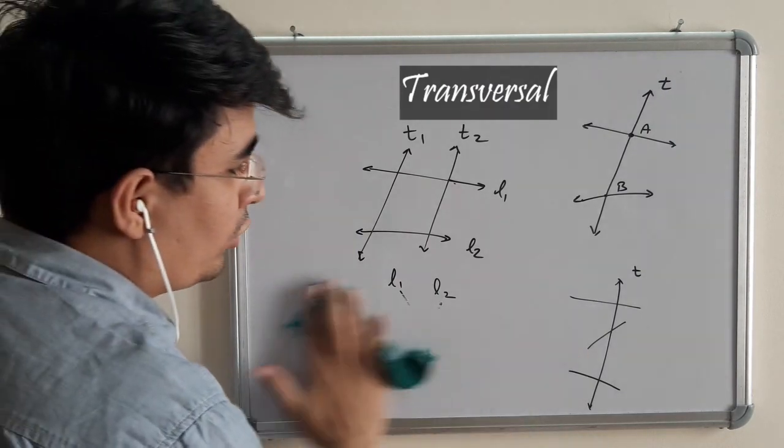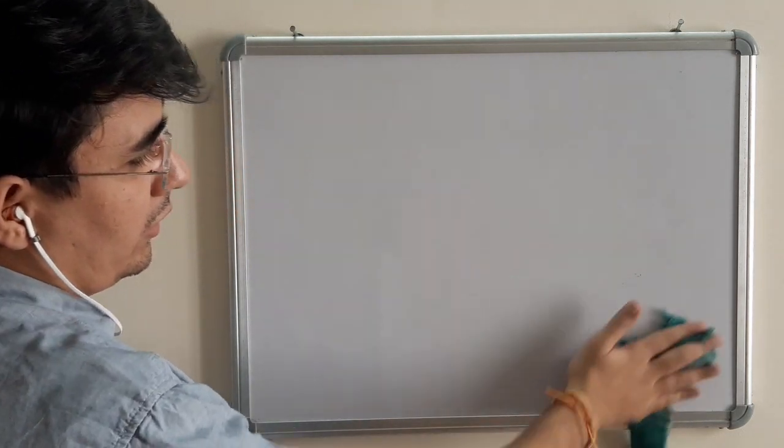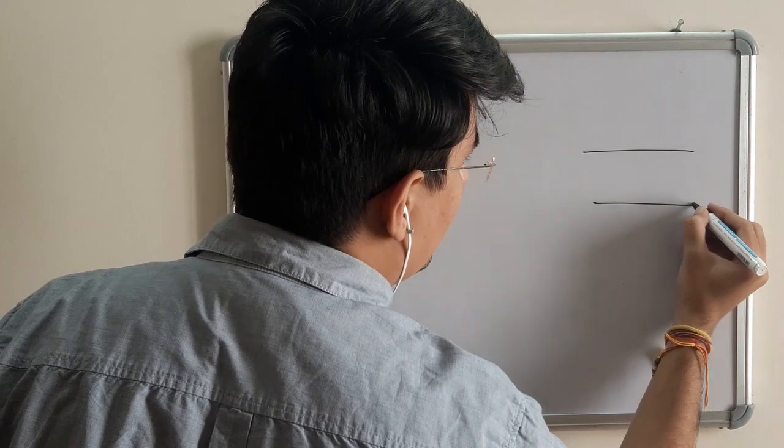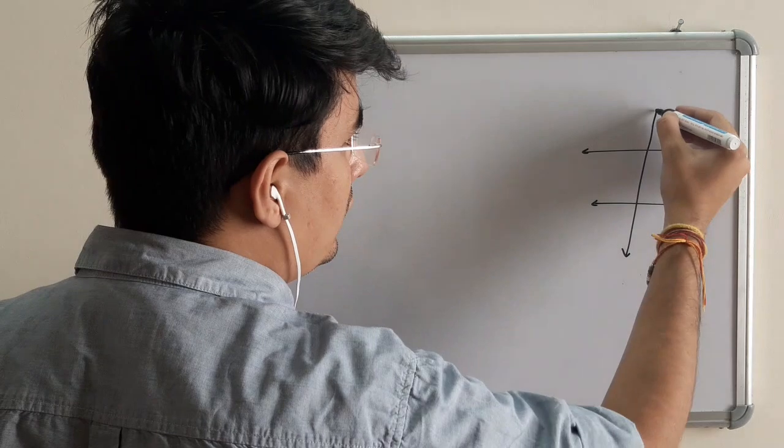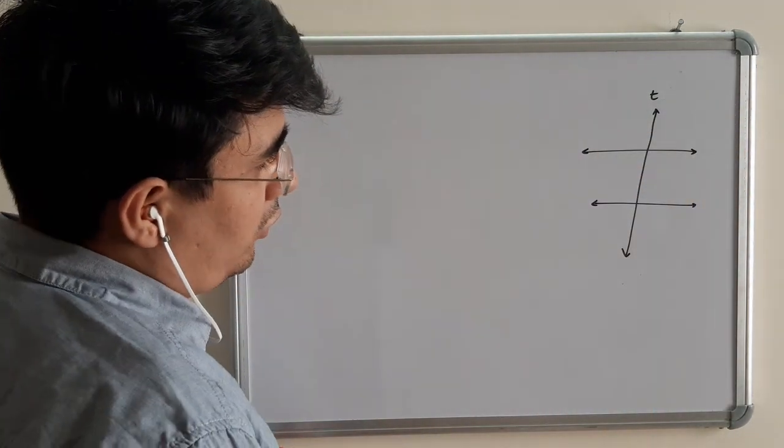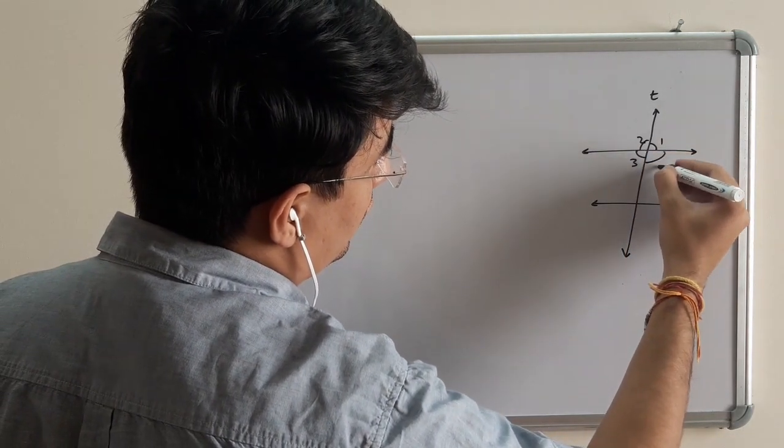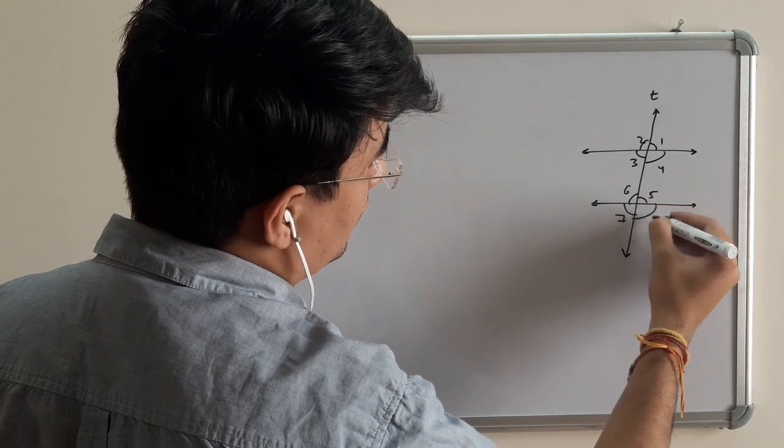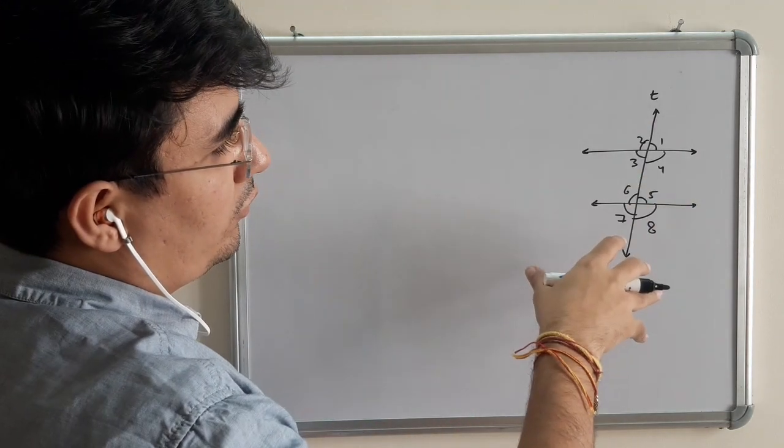Now coming to the importance of transversal in lines, I observe basically jointly. And if the lines are parallel, then it becomes very important. First of all, let us try to understand the multiple angles which are formed. If you see carefully, there are angles 1, 2, 3, 4, 5, 6, 7, 8. There are 8 angles which are forming in this whole figure.